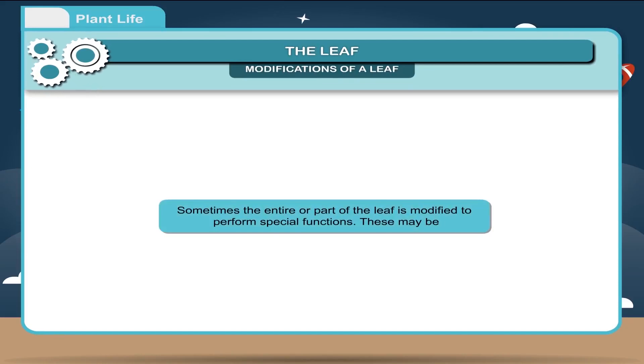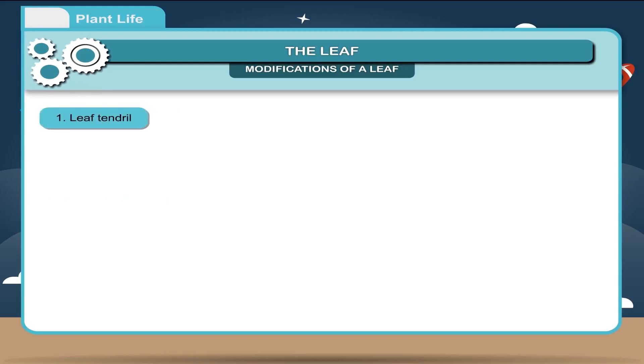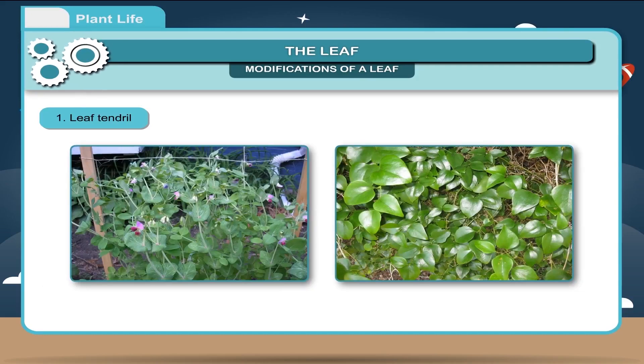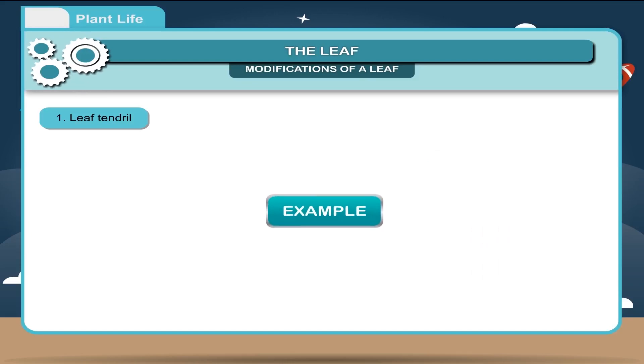Modifications of a Leaf: Sometimes, the entire or part of the leaf is modified to perform special functions. These may be: First, leaf tendril. In some weak stemmed plants, the leaf is modified into a tendril, which helps the plant in climbing. Example: sweet pea, smilax.